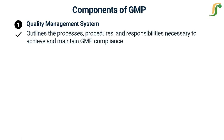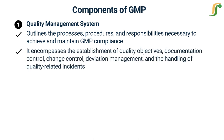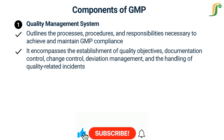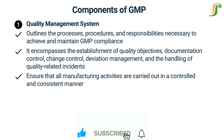The Quality Management System is a comprehensive framework that outlines the processes, procedures, and responsibilities necessary to achieve and maintain GMP compliance. It encompasses the establishment of quality objectives, documentation control, change control, deviation management, and the handling of quality-related incidents. The QMS provides a systematic approach to ensure that all manufacturing activities are carried out in a controlled and consistent manner.